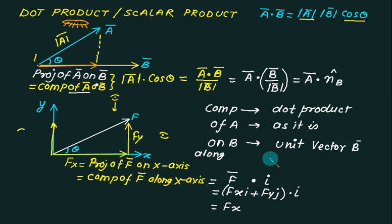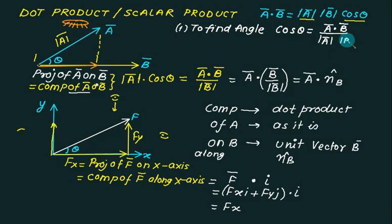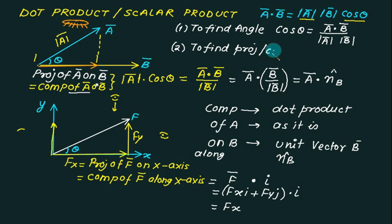There are two applications of the dot product. Number one: to find the angle between two vectors — cos theta equals a bar dot b bar upon mod of a upon mod of b. Number two: to find the projection, which we can also call the component.